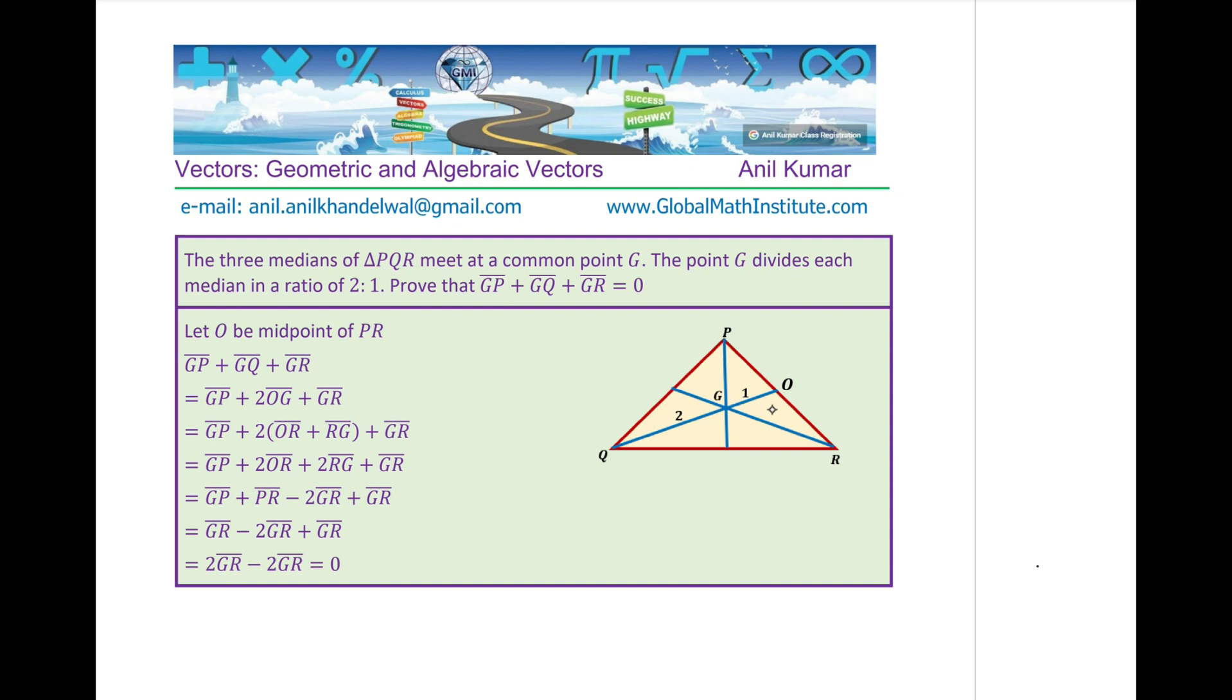In that case, GP to GQ plus GR will be equal to what? We can write GQ as sum of G to Q, which is 2 times O to G. So we have written as 2OG. And now, OG has been written as combination of OR and RG. Do you see that?